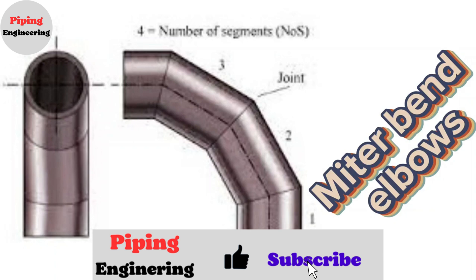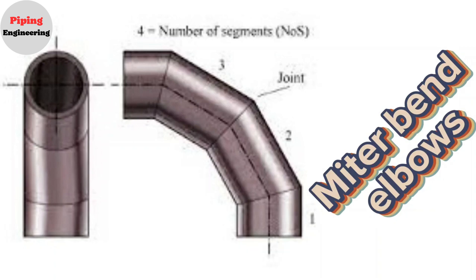Miter elbow or bend is made from miter cut pieces of pipe. A miter bend elbow is economical cost and it can be made at the site or in the workshop. Miter bends can be fabricated with 2, 3, 4, and 5 miters. A miter bend elbows, used above 6 inch for utility lines.